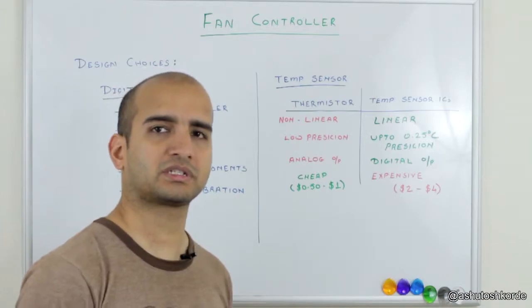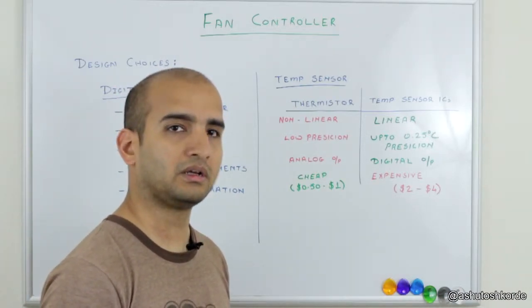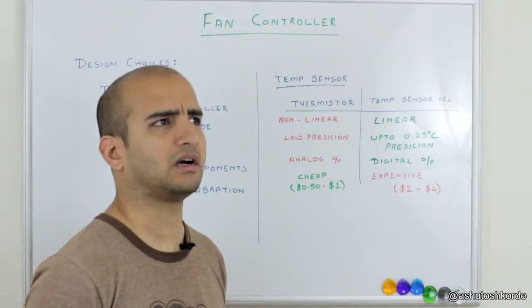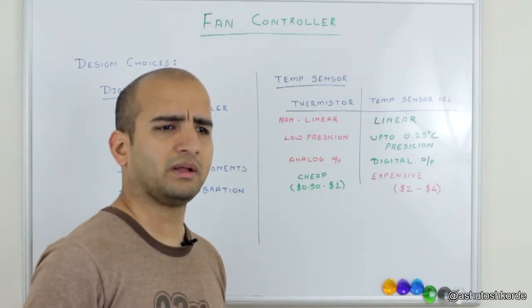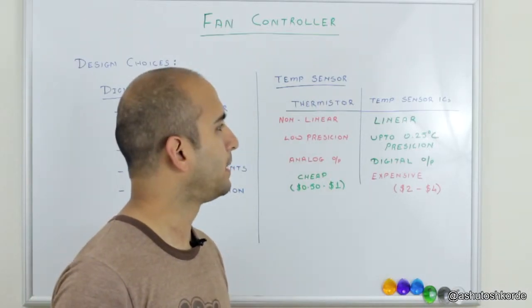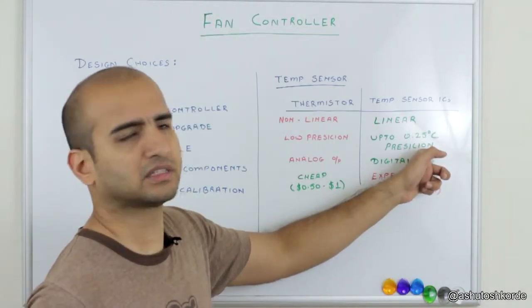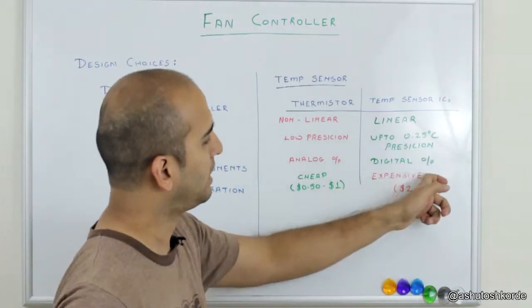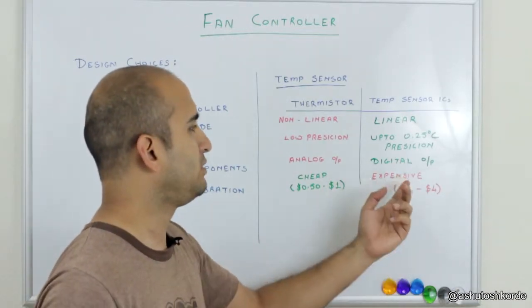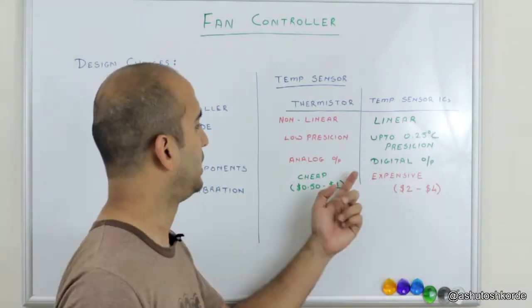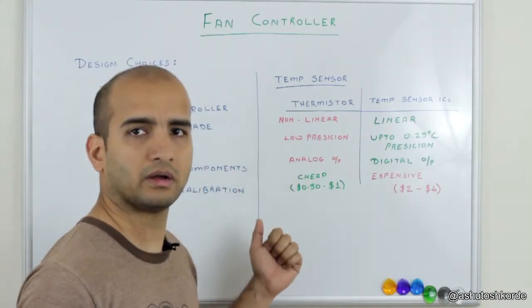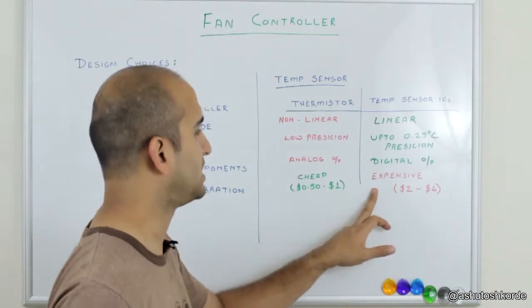Well, all we want to do is just measure some temperature and either we turn on the fans or we turn off the fans. And it doesn't matter if we are a degree or two off from the actual temperature, and we definitely won't need that precision in our fan controller. Digital output, well yeah sure, I mean we can use it,